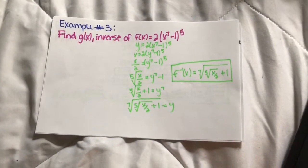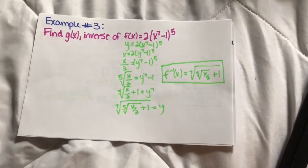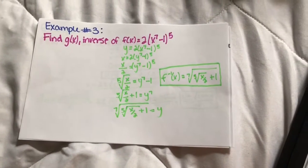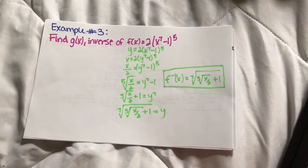Example 3. Find g(x), which is the inverse of f(x) equals (2x⁷ - 1)⁵. This one's a little harder, but the same steps apply to this one just like the previous one.